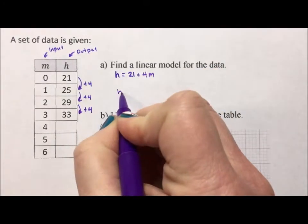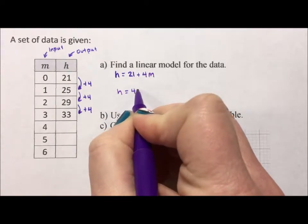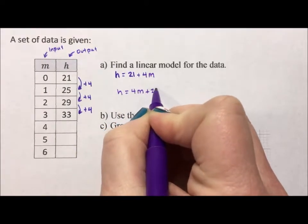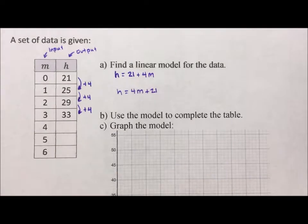I could write the equation like this. If you would like it in the more standard form, you can write 4m plus 21. Doesn't matter. They're both meaning the same thing.